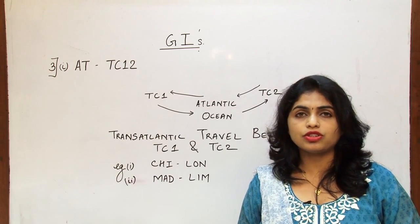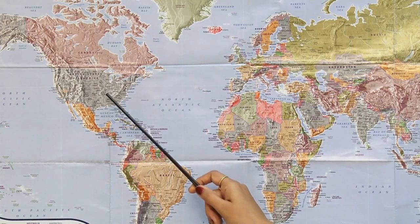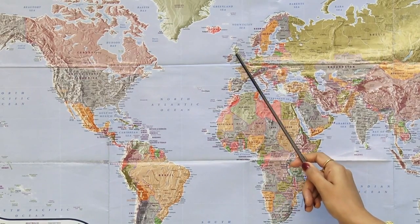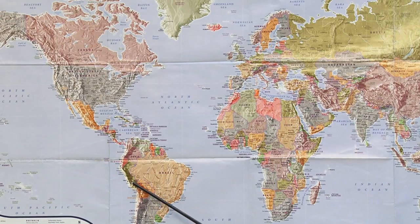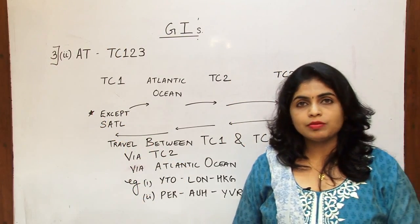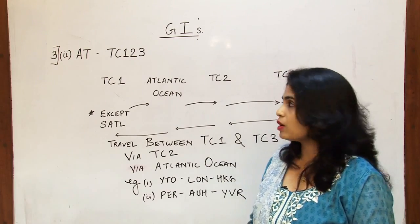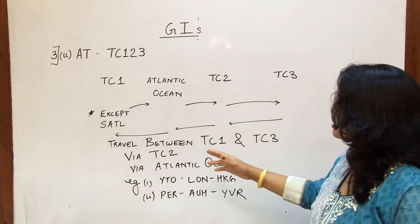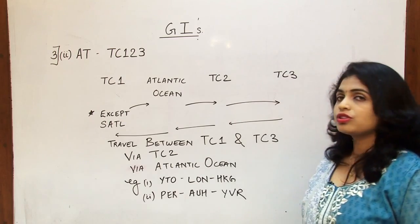The second case where AT is the global indicator is when travel involves Traffic Conference Areas 1, 2, and 3 together. The flight departs from Area 1, crosses over the Atlantic — which is how the name transatlantic is given — arrives at Area 2, and then continues further to Area 3. The reverse is also possible, but there is an important condition: it must be except for the South Atlantic area.